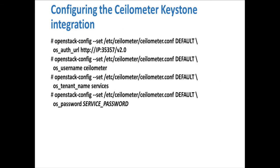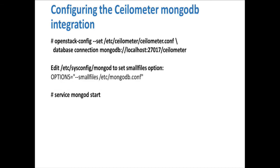And then we complete the configuration by making these available to the Selometer services themselves, so all of this results in Selometer.conf being updated with appropriate settings. Selometer, as I mentioned earlier, runs on top of MongoDB. So the next step would be to configure Selometer to point to the appropriate MongoDB environment. In this case, I'm just pointing to an instance on localhost — obviously it could be whichever host you have MongoDB installed on. One of the recommended settings is to enable the small files option for MongoDB. The middle step outlines enabling that option. And then finally, start the MongoDB service.